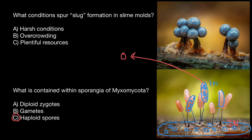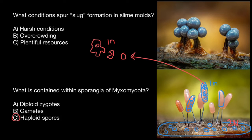The spore would germinate — it bursts open and an amoeba would emerge. The amoeba is 1N, haploid, and it behaves as an amoeba. You cannot tell the difference from other amoeba.